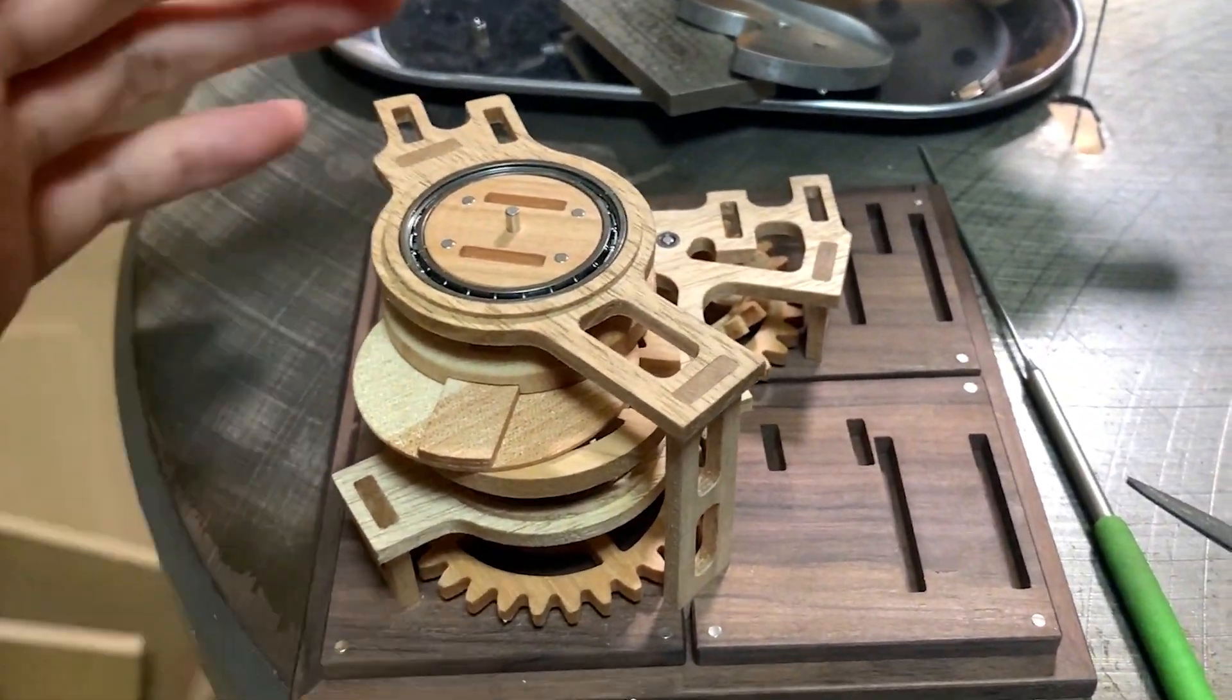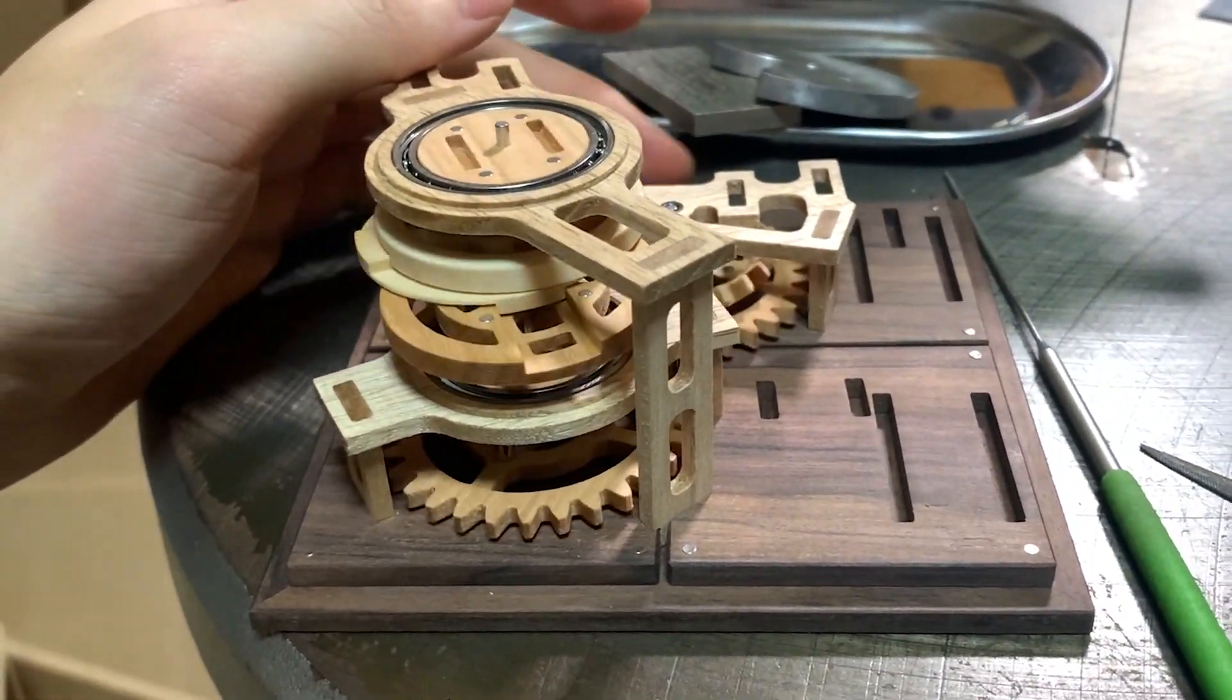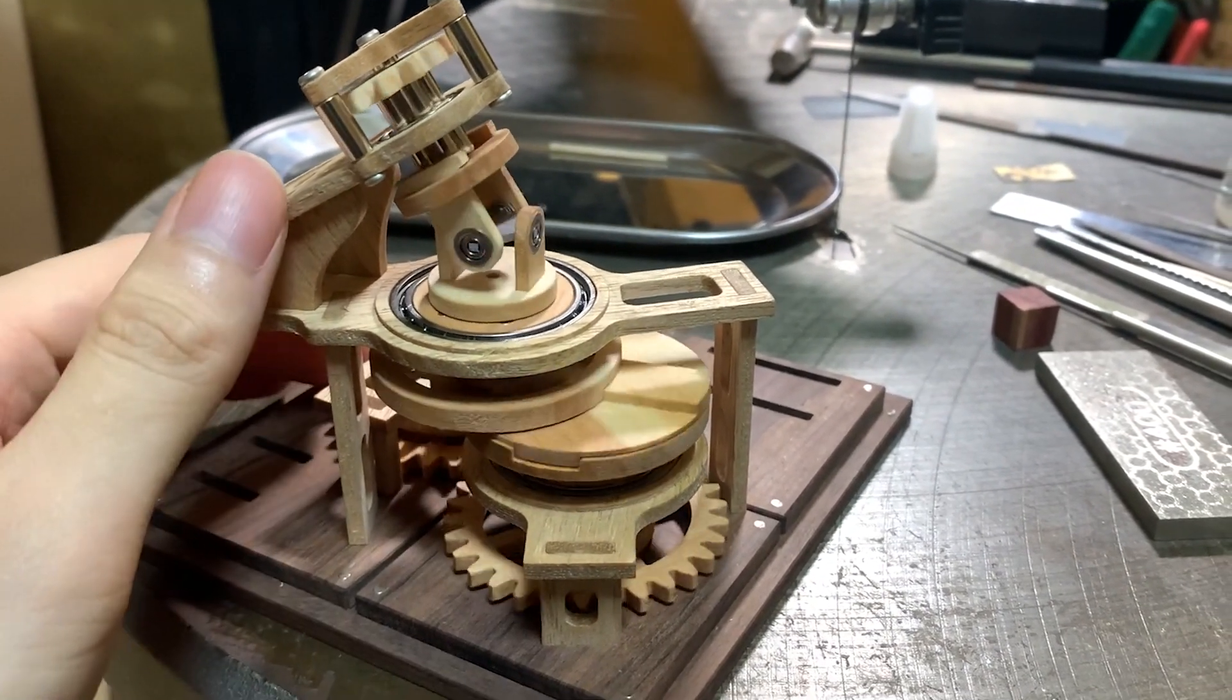An Oldham coupling transmits energy through the parallel parts, while a universal joint transmits energy through the rotating parts.